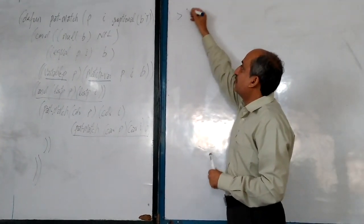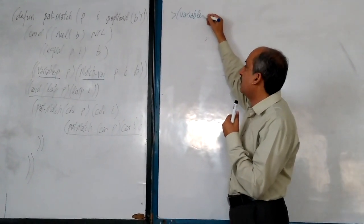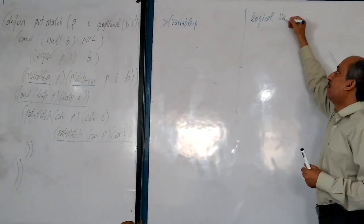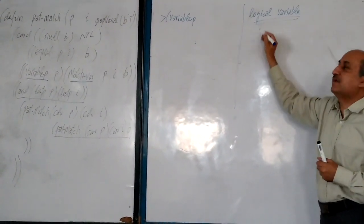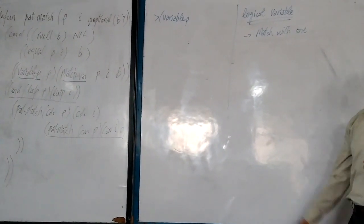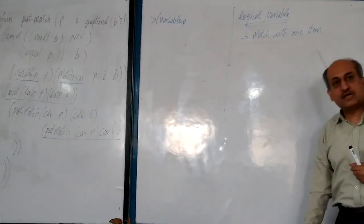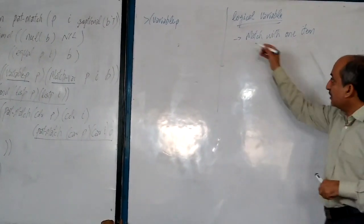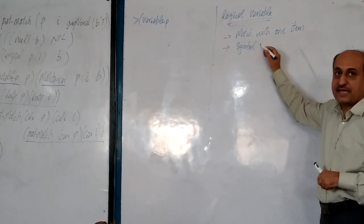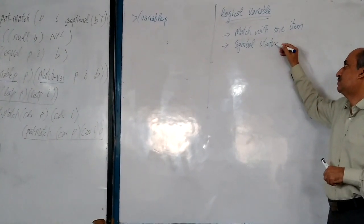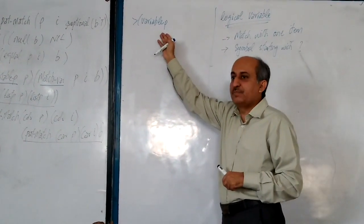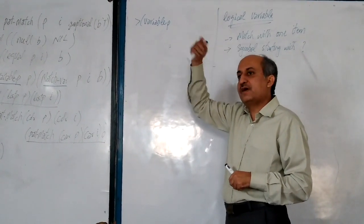The variable? function is basically our function to check whether its argument is a variable or not. In pattern matching, a logical variable is a special symbol which can match with any one thing — exactly one item. That item can be a number, a list, or a symbol, but it should be one thing. The convention for the logical variable is that it is a symbol starting with a question mark.